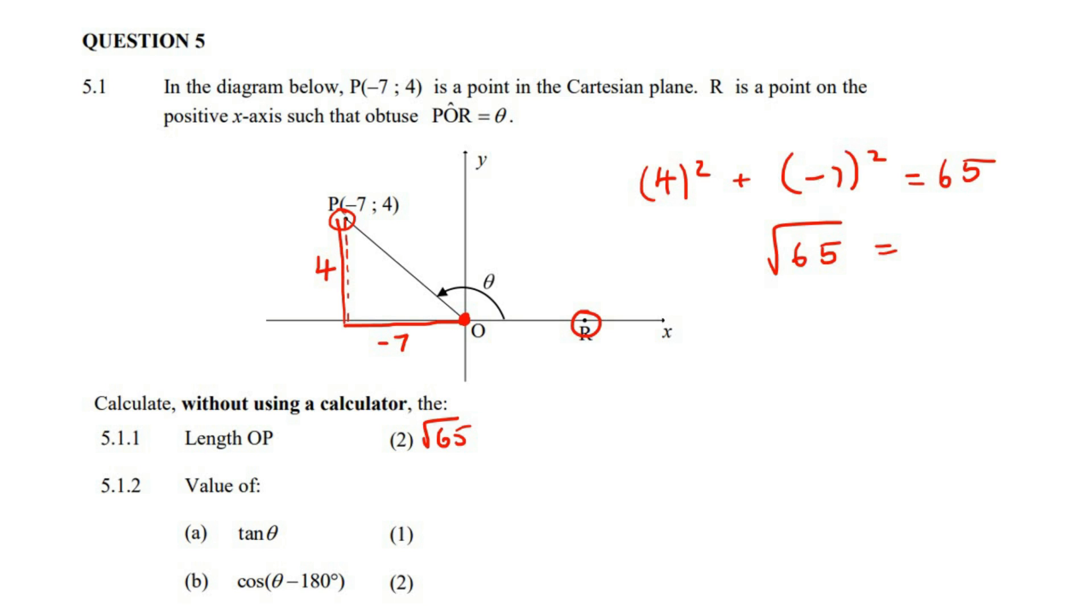The next question for one mark says, what is the value of tan theta? When theta's over here, you can actually just pretend that we are using this angle in the corner. So you can just think of the grade 10 formulas that we learned, SOHCAHTOA. Tan theta is equal to the opposite over the adjacent, which is negative seven over four, and then stop, because many learners want to then go further and start working out the angle, but they're not asking you for the angle, they're literally asking you for tan theta.